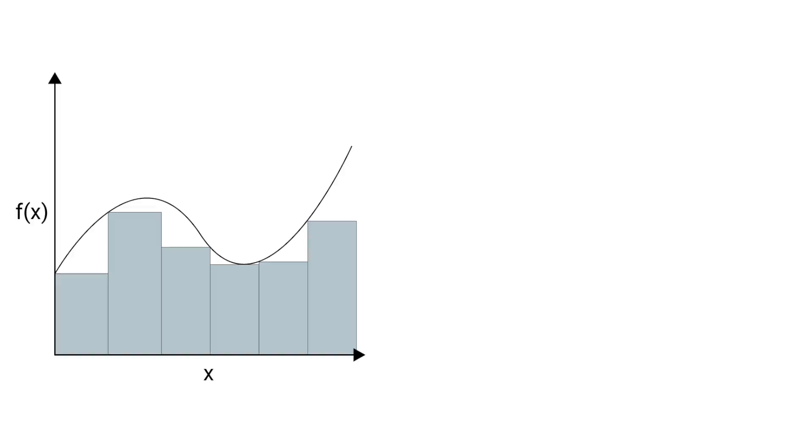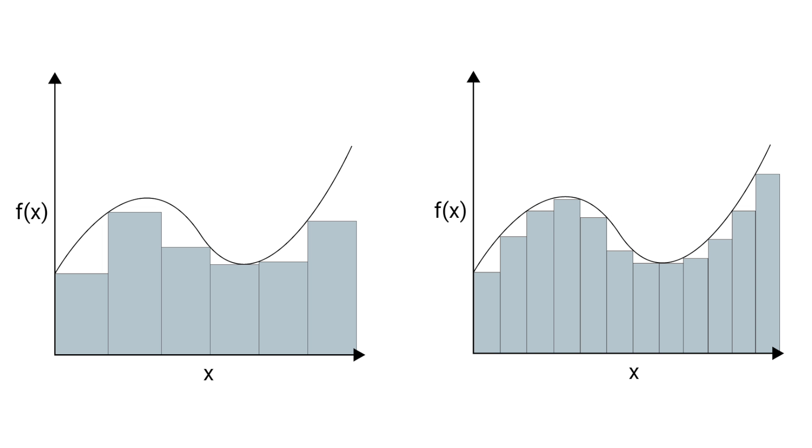Another way to look at ALEs is they are similar to integration or at least a Riemann sum that approximates an integral. The local effects are the rate of change or derivative of the function. By accumulating the effects, we find the black box model curve. The smaller our intervals, the closer we are to the true curve. Unfortunately for ALEs, we cannot make the intervals infinitely small.